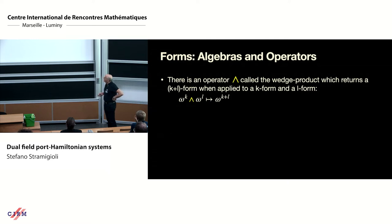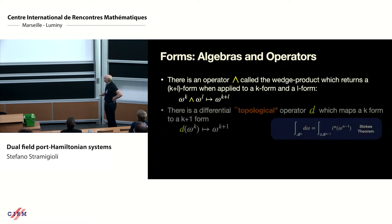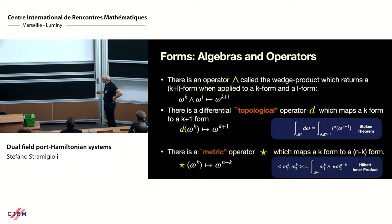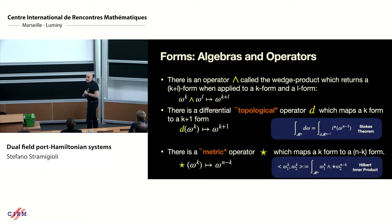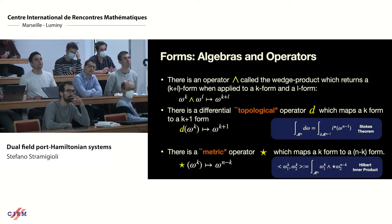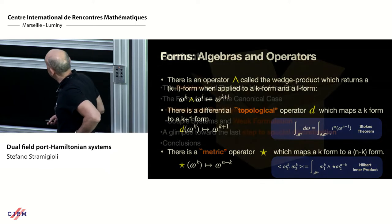The wedge product takes a k-form and l-form to produce a (k+l)-form. The topological operator D — from which Stokes' theorem comes — increases the degree by one. Then you have the Hodge star operator, which is the metric operator. This is the one that gives the Hilbert structure, the inner product in this setting.